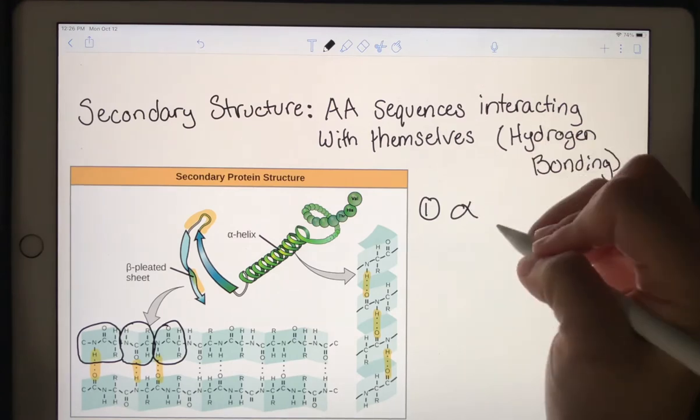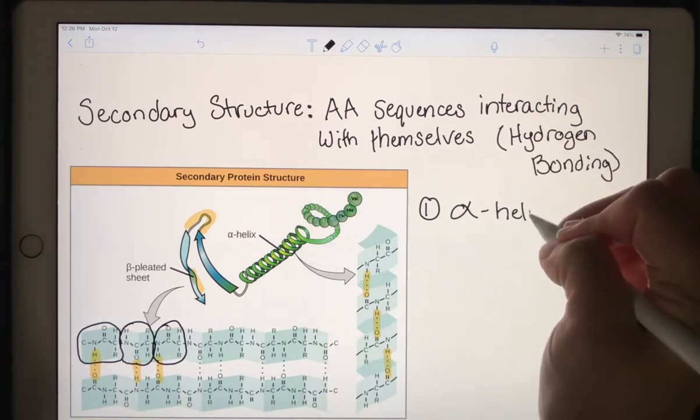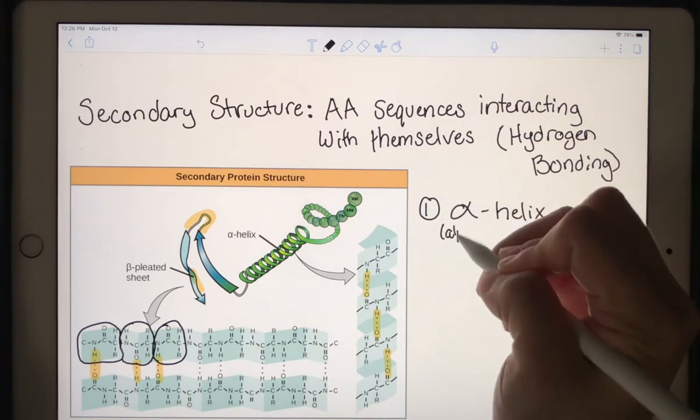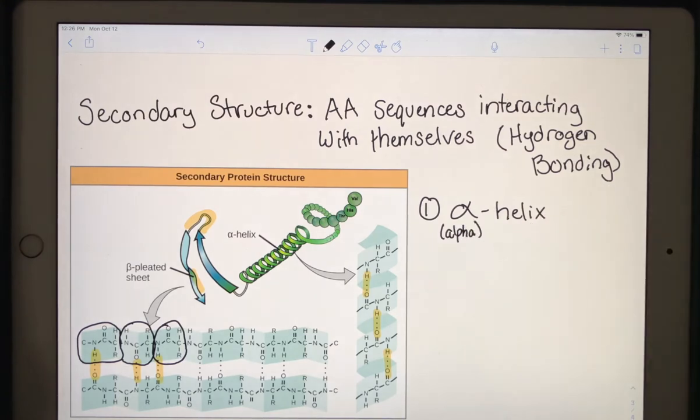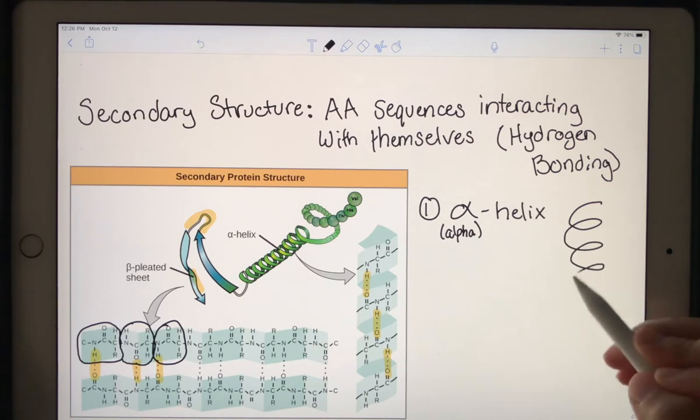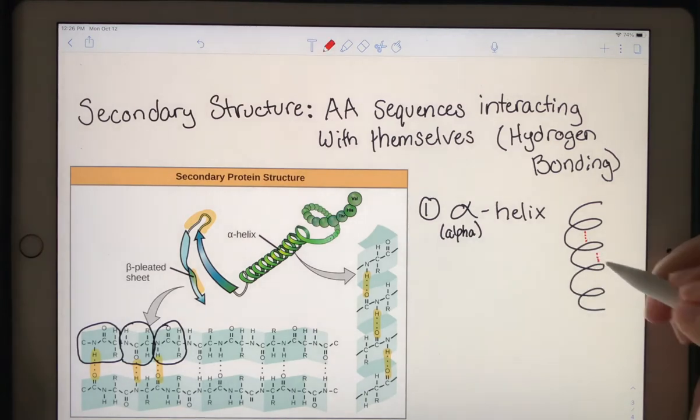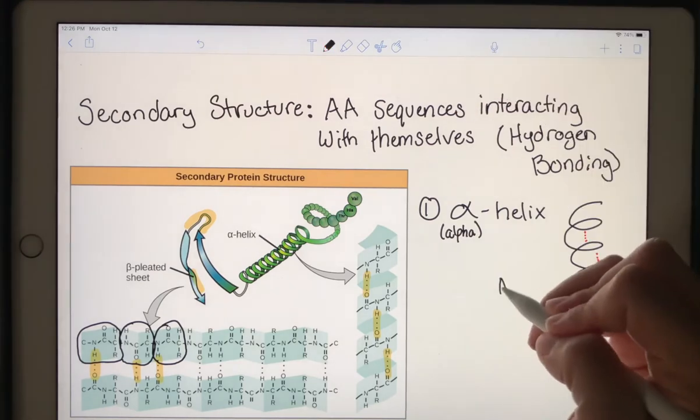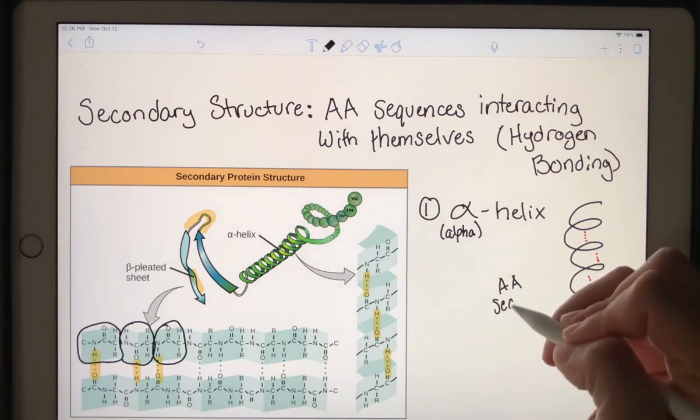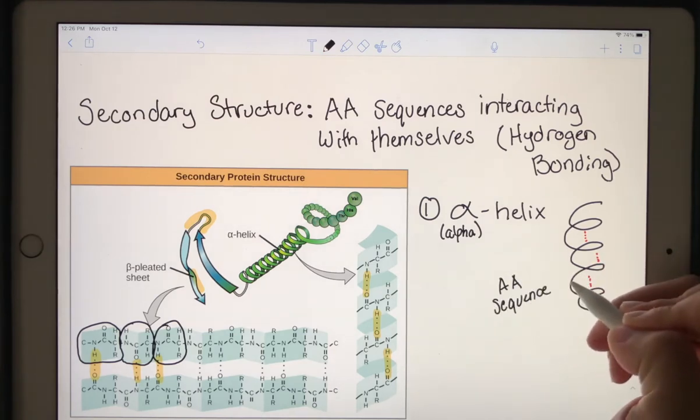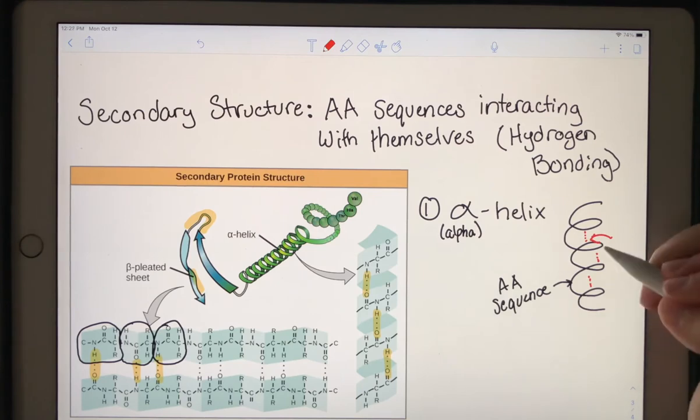One is the alpha helix. If you need to write that in, go ahead. But an alpha helix is just going to be that spiral. And then you have hydrogen bonds between the different layers. This would be a simplified sketch of an alpha helix. Remember, the line is the amino acid sequence and those red dots are representing hydrogen bonds.